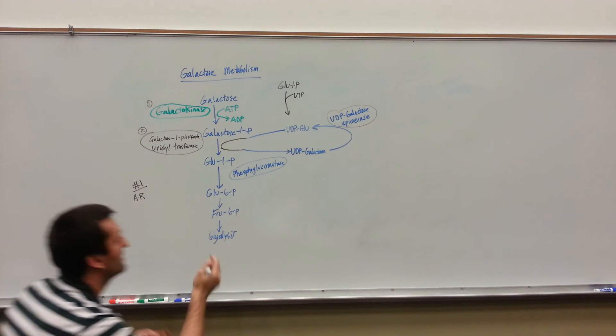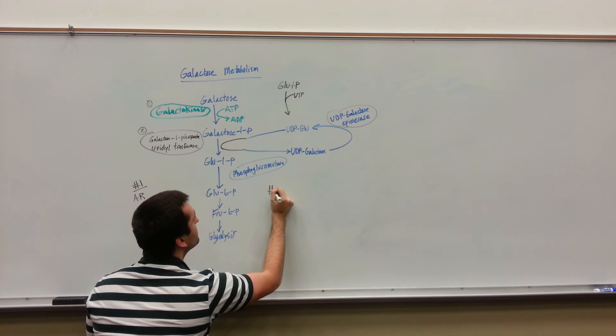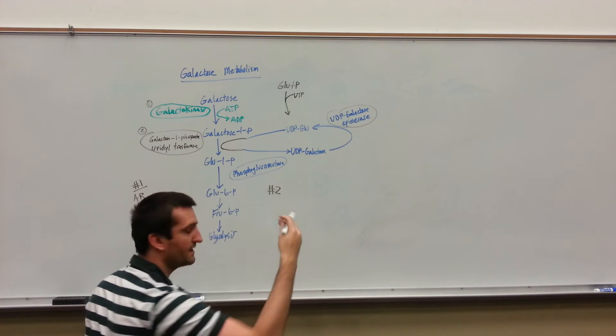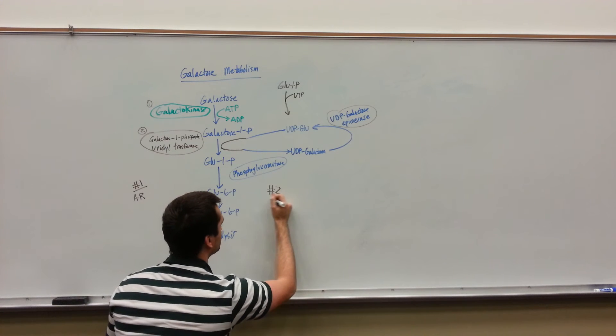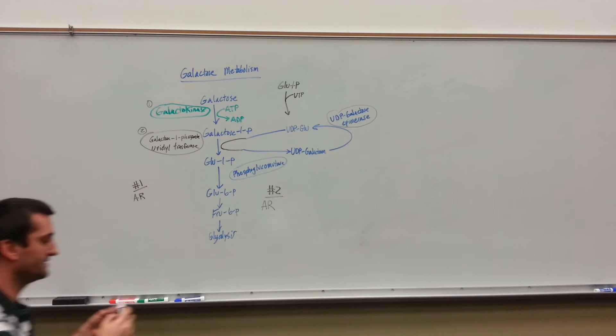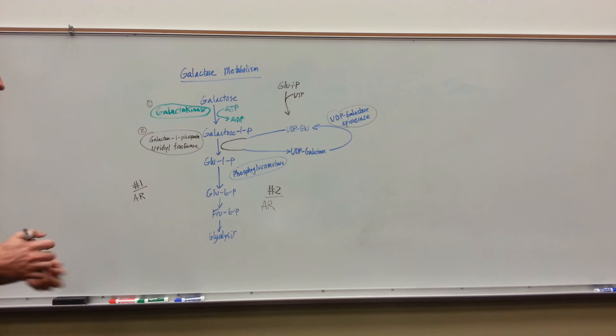It's going to be an autosomal recessive. Likewise, the second one, the galactose 1-phosphate uridyl transferase, is also going to be an autosomal recessive disease. Both are going to be, the newborn is not going to be able to digest or metabolize the galactose in the correct way. Is galactokinase deficiency going to be a problem? Yes, it actually is because this galactose can also get further broken down.